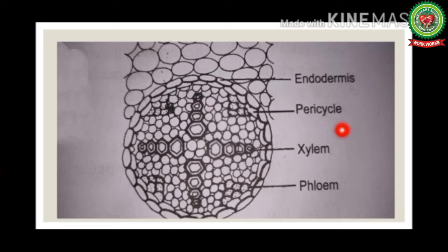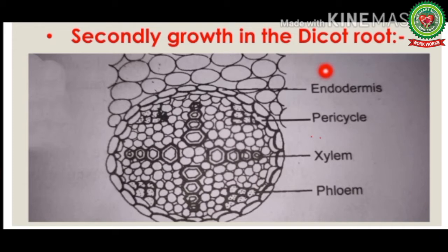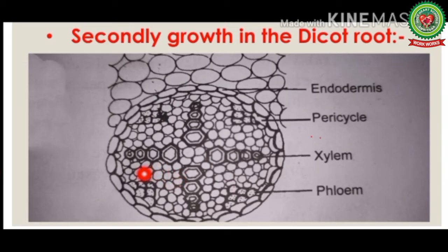Now we will discuss the mechanism of secondary growth in dicot root. Secondary growth occurs due to the presence of vascular cambium, but in dicot root this cambium appears only at the time of secondary growth — meaning vascular cambium is secondary in origin. The parenchyma cells present between phloem and xylem, called conjunctive tissues, become meristematic and result in the formation of cambium strips just below the phloem.